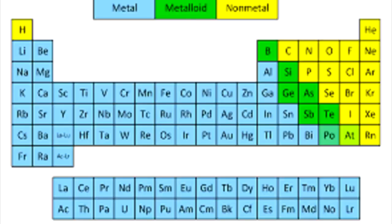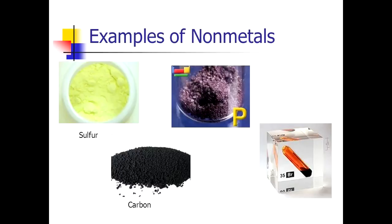Examples of non-metals: carbon, nitrogen, oxygen, fluorine, phosphorus, sulfur, chlorine, and argon. Also sulfur, phosphorus, carbon, and bromine are non-metals.